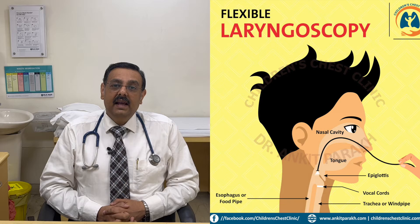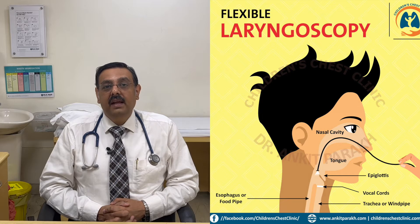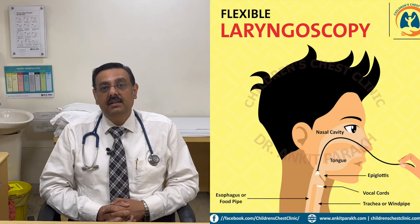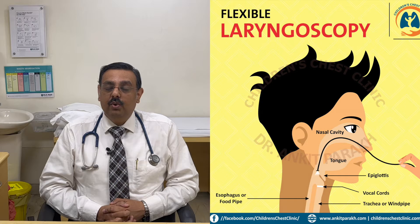The laryngoscope is then advanced further where we reach the voice box, the larynx, and here we evaluate the voice box which includes the epiglottis and the other cartilages. We also look at the movement and the symmetry of the vocal cords.